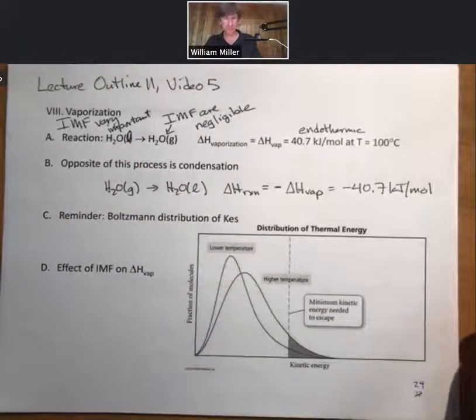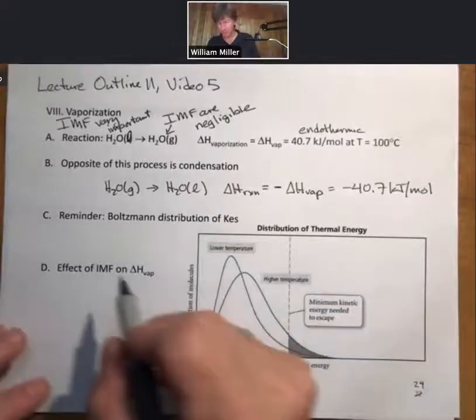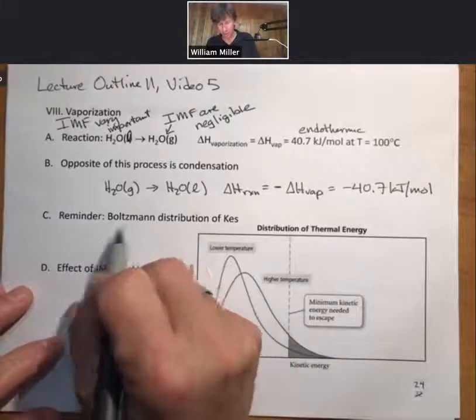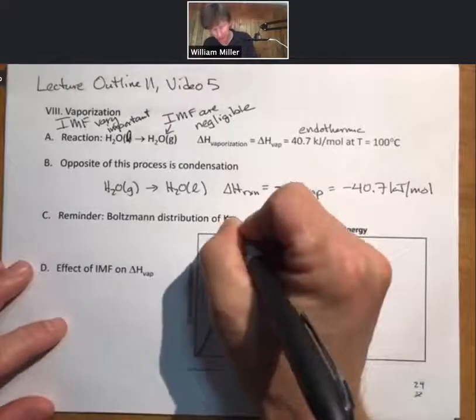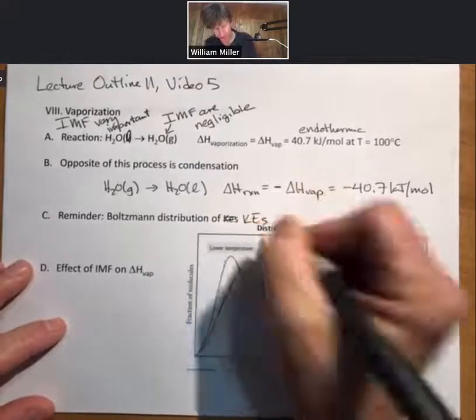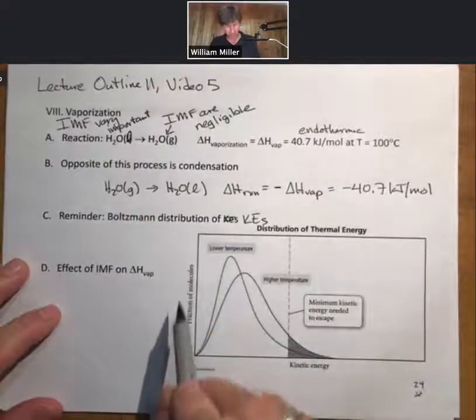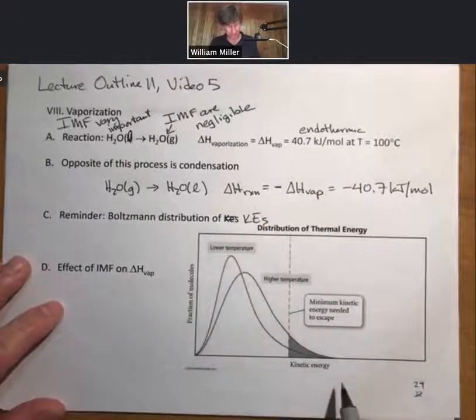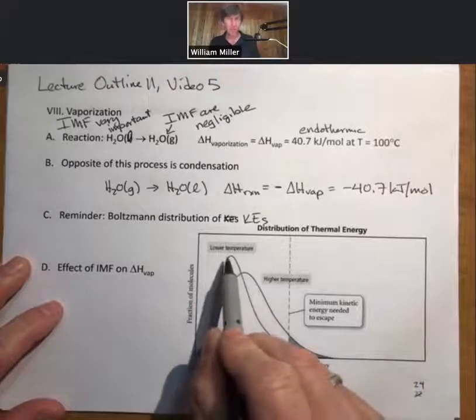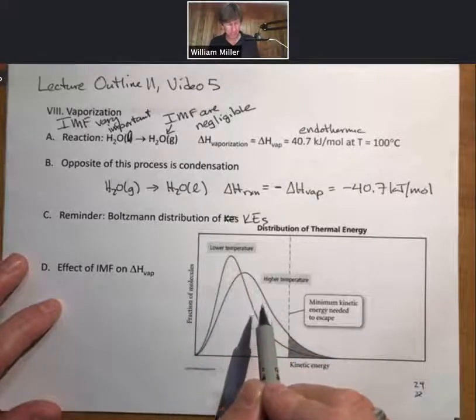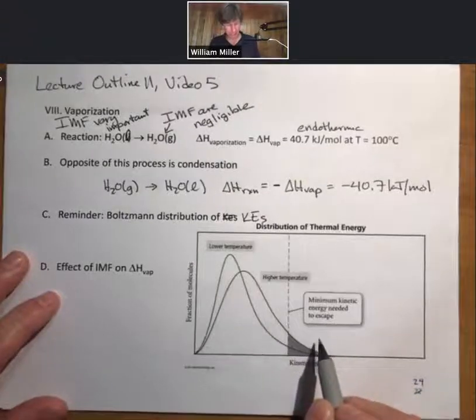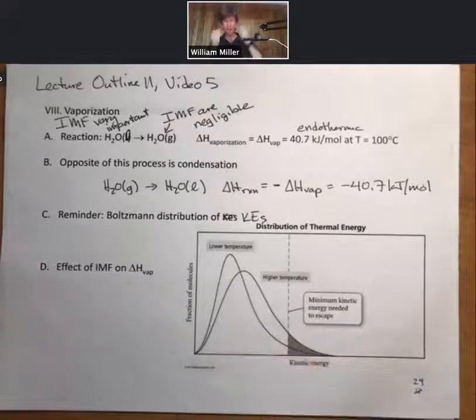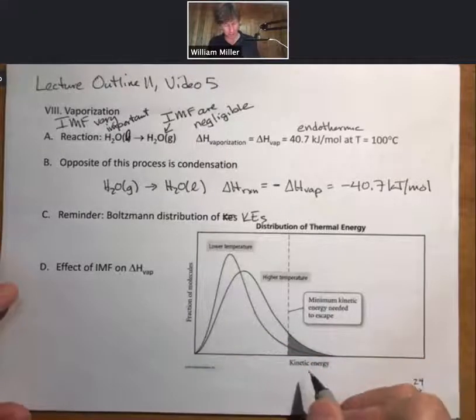Let's go back to the Boltzmann distribution of kinetic energies for gases. We have fraction of molecules versus kinetic energy, and we've seen this before: lower temperature and higher temperature. If we think of the minimum kinetic energy needed to escape to the gas phase, at higher temperature they're moving faster, they have more kinetic energy, and more of them can escape into the gas phase.